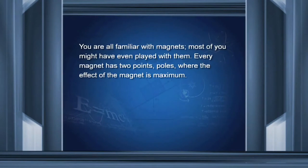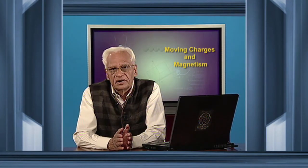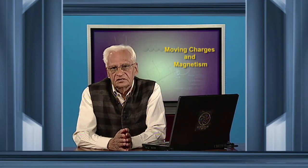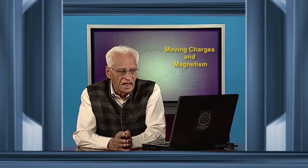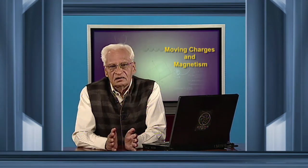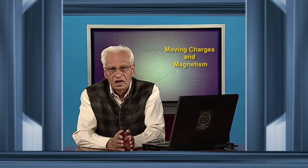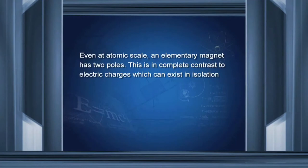You are familiar with magnets; most of you might have even played with them. Every magnet has two poles. An important fact to remember is that no magnet has ever been found with one pole, or an isolated pole called a monopole. This implies that whatever the conditions, each magnet must have two poles. If you cut a magnet, the two portions also have two poles each. Even at atomic scale, an elementary magnet has two poles.